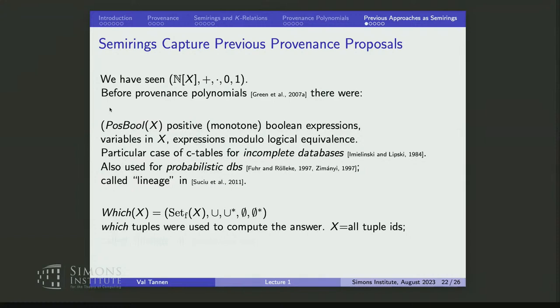A few years earlier, an approach to provenance in which the provenance was simply a collection of tuple IDs — all the tuple IDs you could touch in your evaluation — was also called lineage. That was in the work of Cui and Jennifer Widom. So two completely different things were both called lineage and have nothing to do with each other.